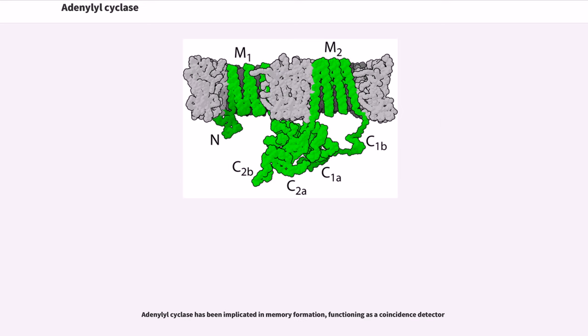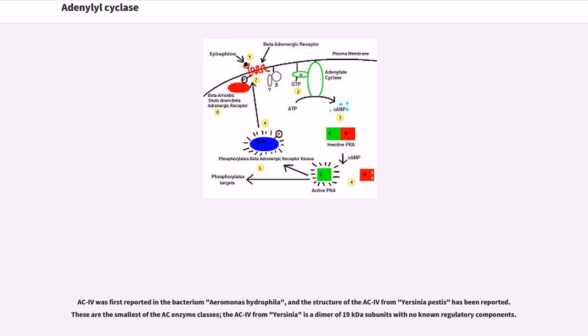Adenylyl cyclase has been implicated in memory formation, functioning as a coincidence detector. AC4 was first reported in the bacteria Aeromonas hydrophila, and the structure of the AC4 from Yersinia pestis has been reported. These are the smallest of the AC enzyme classes.